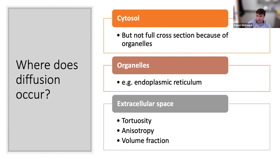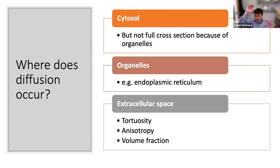These are all things you might want to consider depending on your problem. A useful principle: use the minimum set of assumptions appropriate to your question. You don't need to jump straight into building a giant model with extracellular space and mitochondria. If you don't need it, don't use it. But if you do need it, NEURON is perfectly happy helping you do so.